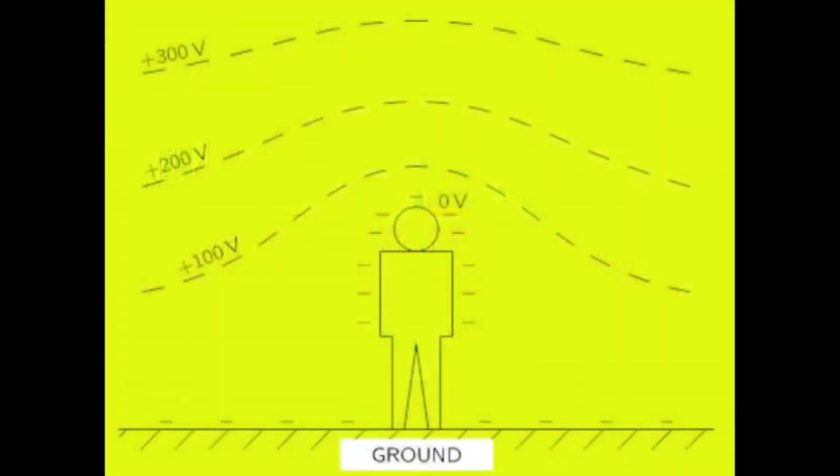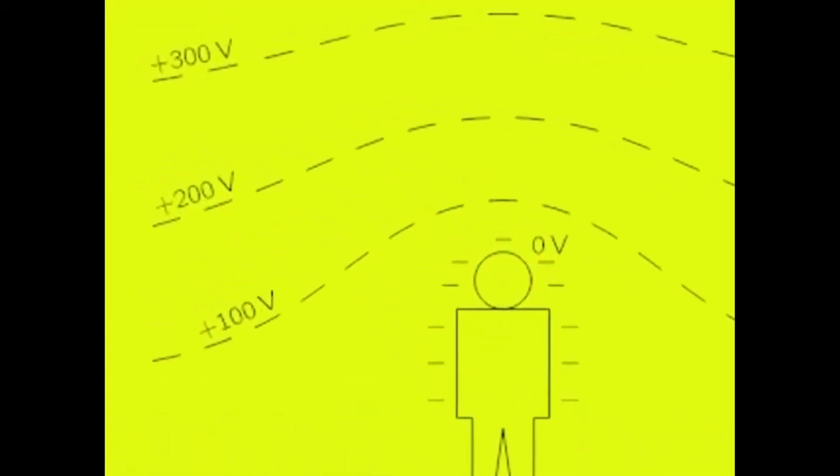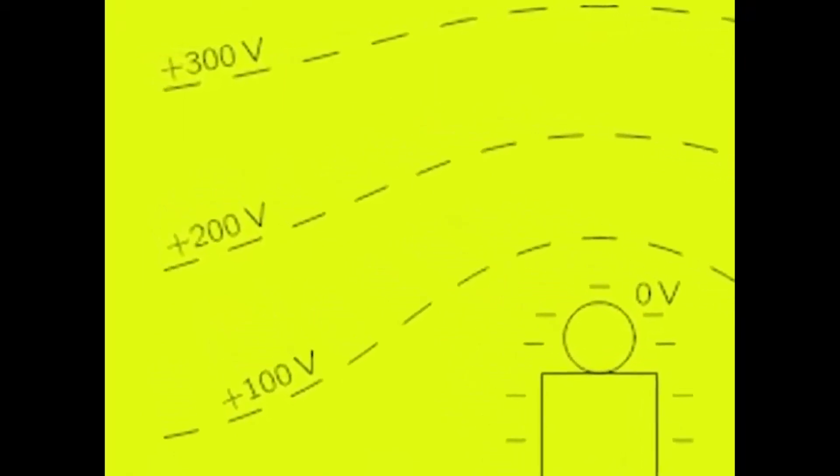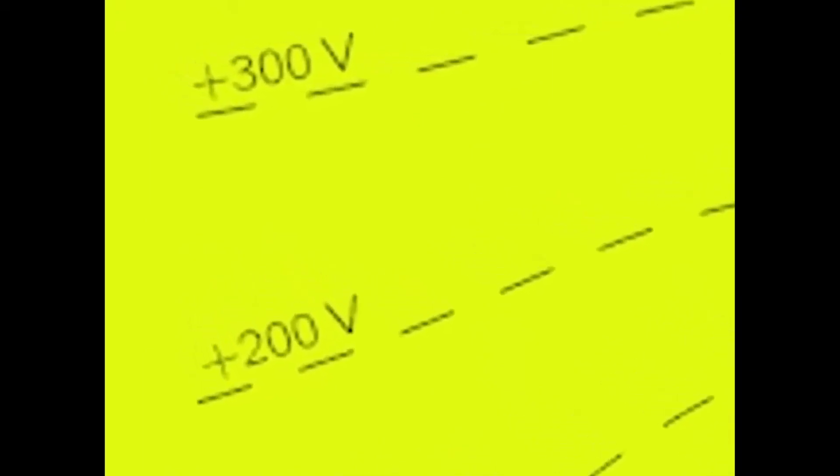The Earth itself has a measurable negative charge compared to the air above it all across the plane. As soon as you leave the surface, there is a positive charge in the air around you that grows in electrostatic potential the further you go up towards the sky.